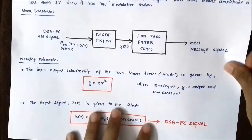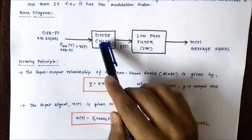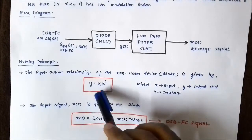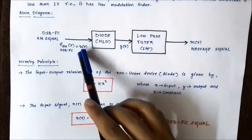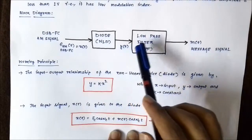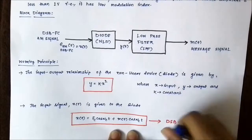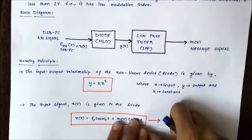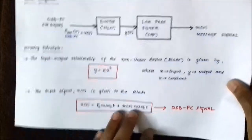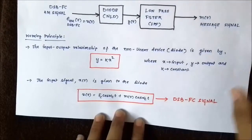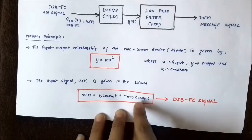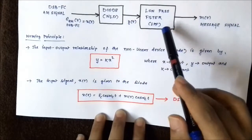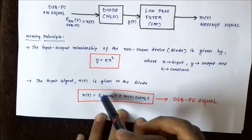The working principle: the input-output relationship of the diode is defined by the expression y = kx², where x is the input — the double sideband full carrier signal — and y is the output which is fed to the low pass filter, and k is the proportionality constant which depends on the characteristics of the diode. The input signal given to the diode is the DSB-FC signal: Ec·cos(ωct) + m(t)·cos(ωct). So the output of the diode, fed to the low pass filter, will be k times the square of this signal.